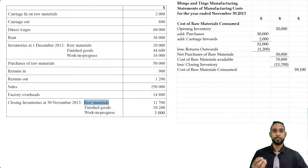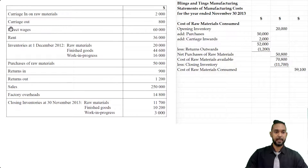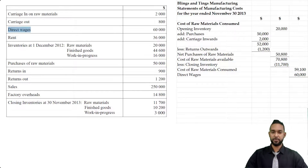The next piece we have to show is prime cost. Prime costs are all of the direct costs of production: the cost of raw materials consumed, direct wages or direct labour, and any other direct costs. From the information I can see direct wages but no other direct costs, so adding those direct wages gives us a prime cost figure of 119,100.